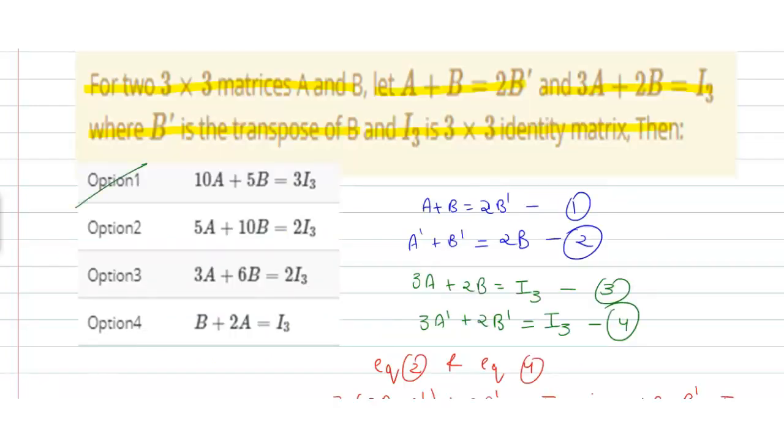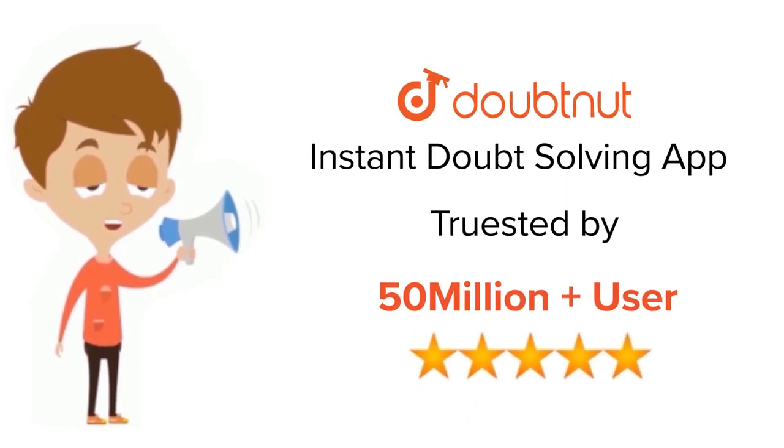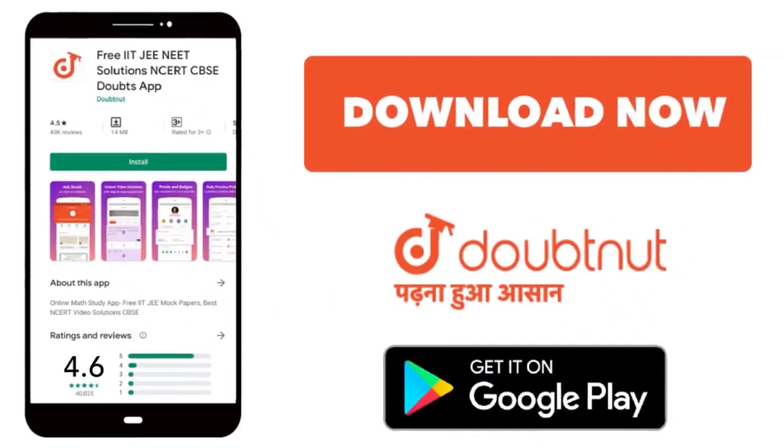Hence option 1 is correct. For class 6-12, IIT-JEE and NEET level, trusted by more than 5 crore students. Download Doubtnet app today.